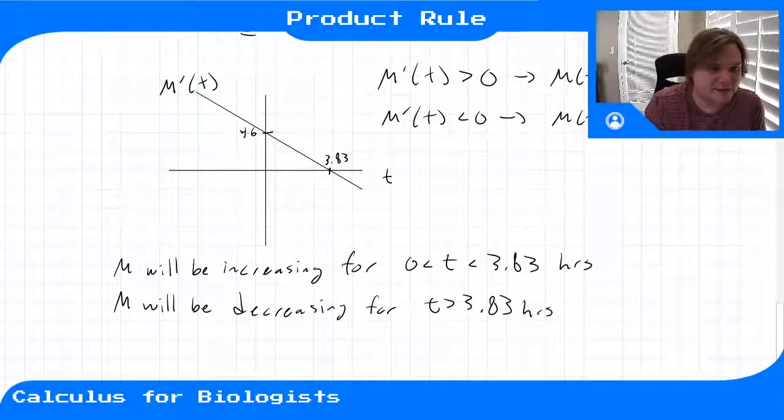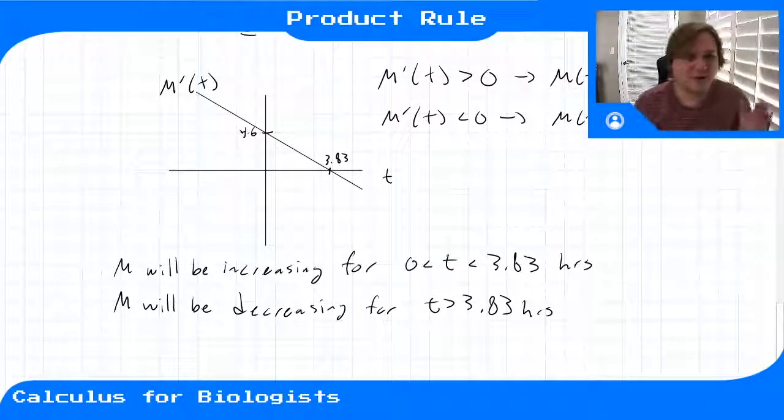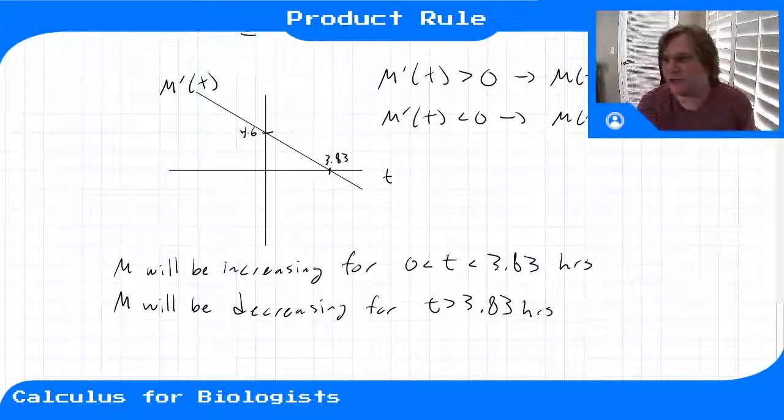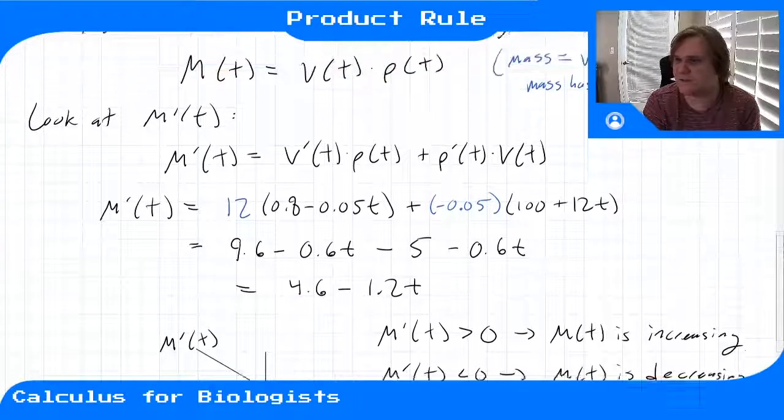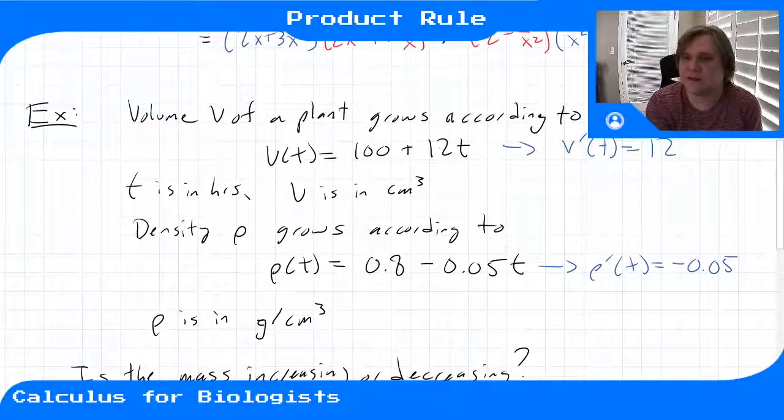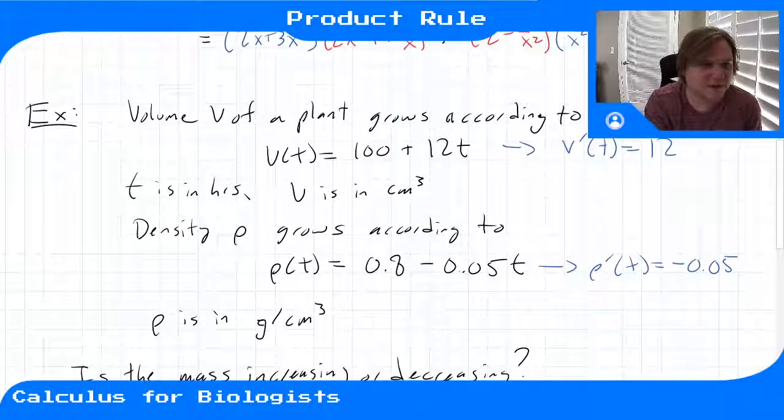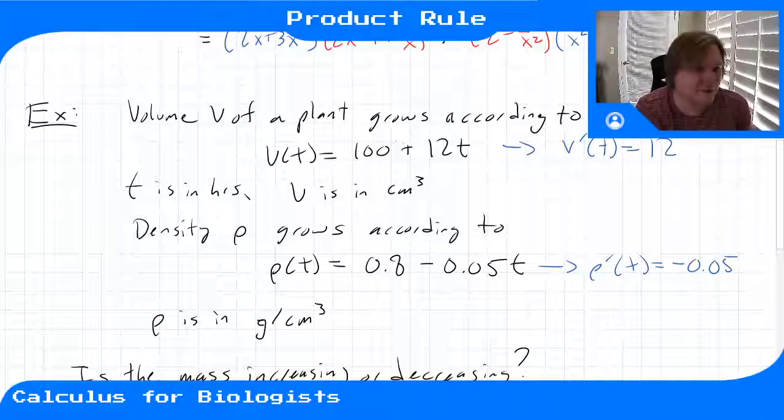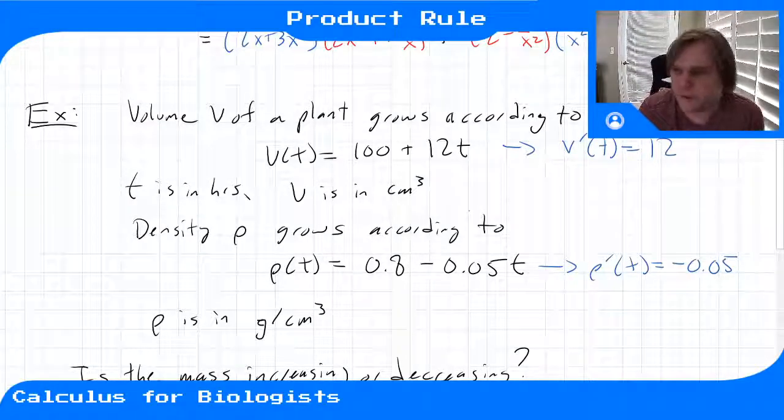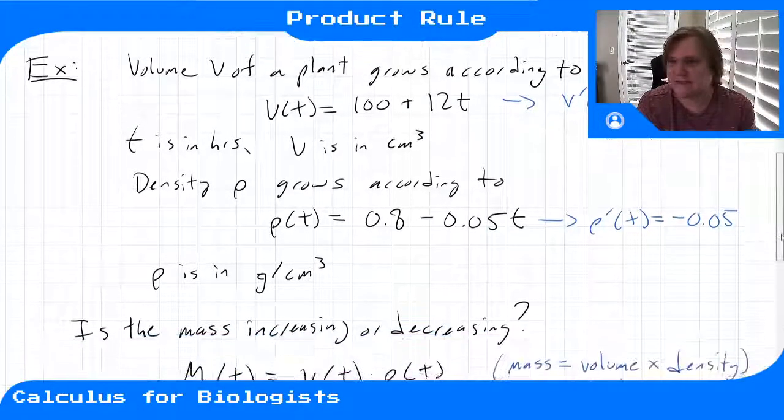The mass is growing up until 3.83 hours, and then it starts to shrink as this density gets smaller and smaller. The volume is growing, but the density is shrinking. And at a certain point, the shrinking of this density outweighs the growth of this volume, which will give you an overall decreasing mass as time goes on.